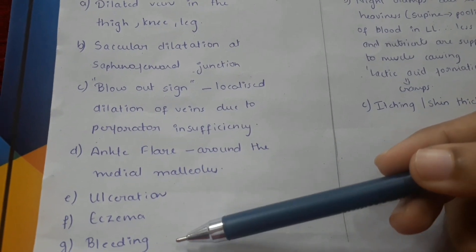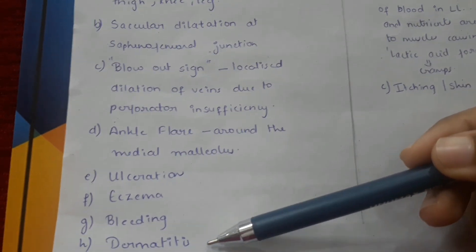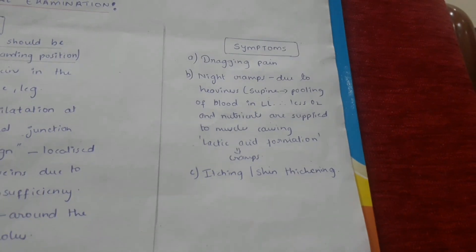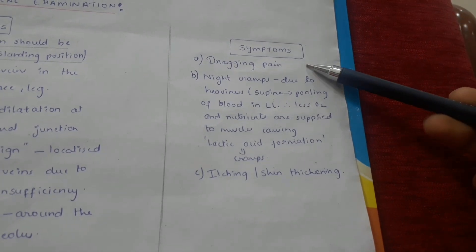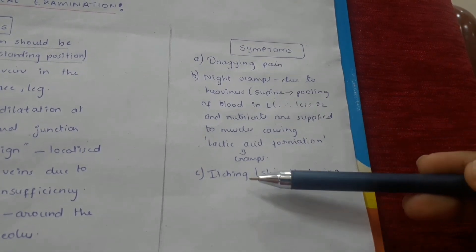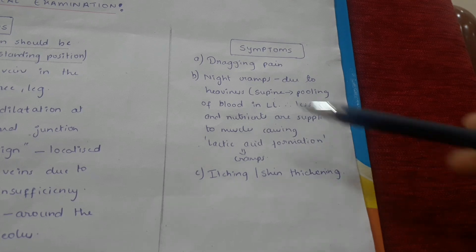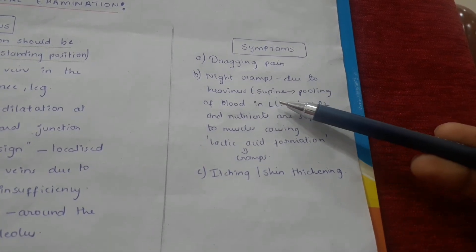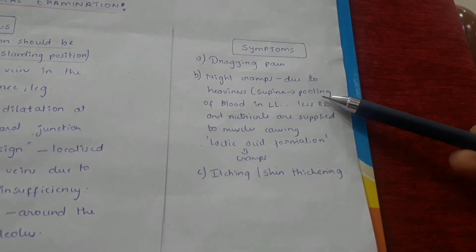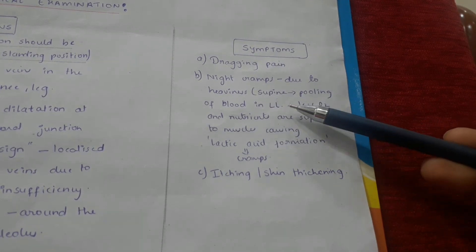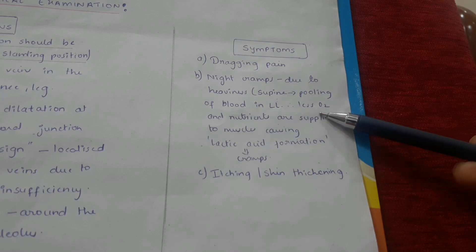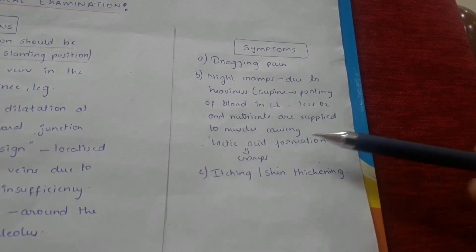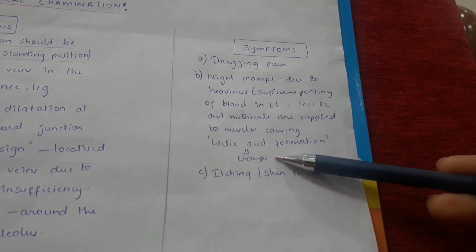Other signs include ulcerations, eczema, bleeding, and dermatitis. Under symptoms, we have dragging pain, night cramps, itching, and skin thickening. Night cramps occur due to heaviness — when the patient lies in a supine position, blood pools in the lower limbs, resulting in less oxygen and nutrients supplied to the muscles, causing lactic acid formation, which further results in night cramps.